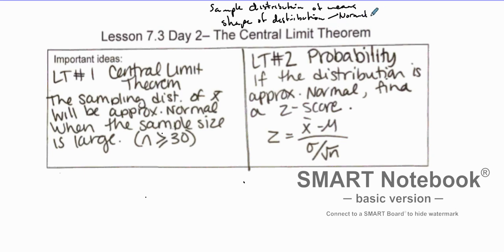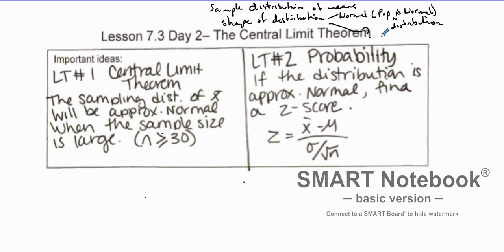If the population is normal, then the sample distribution will also be normal. The question is: what happens when you don't know? Well, if you have a very large n value — you take a lot of samples of the means and create a distribution — when your sample size is greater than 30, the sampling distribution will start to converge into a normal distribution. We call this the Central Limit Theorem.